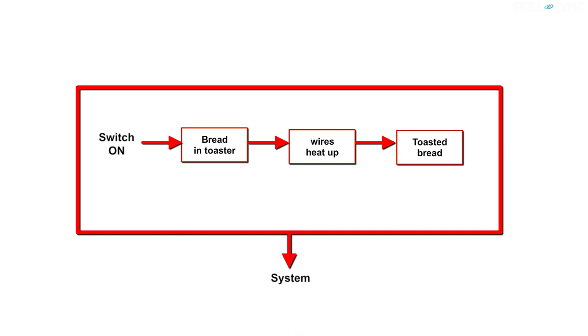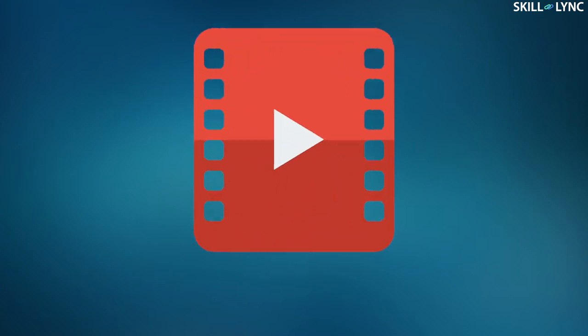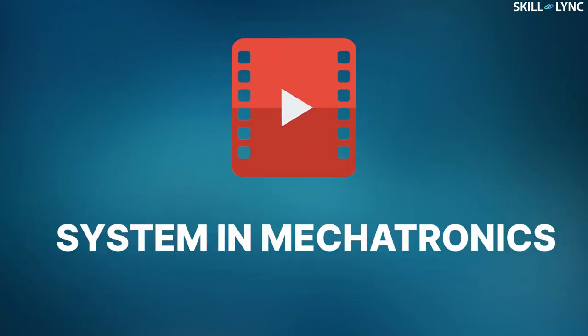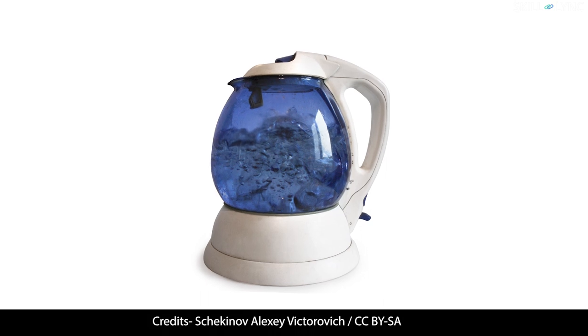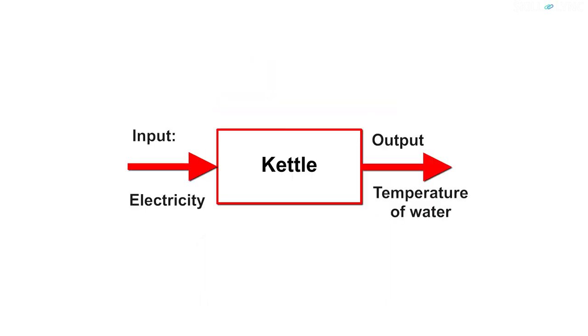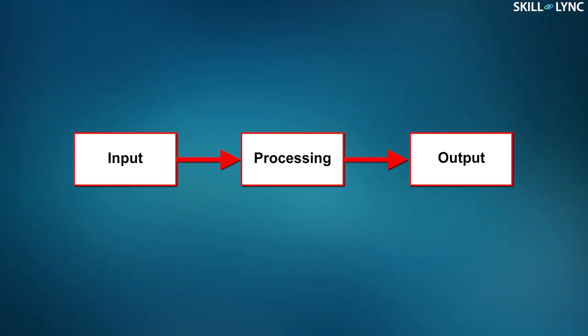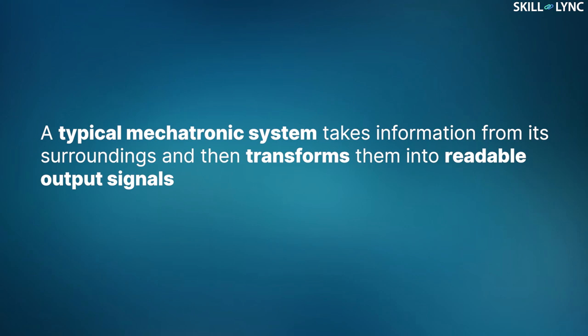In today's video we'll be discussing exclusively mechatronic systems. If we take an electric kettle and boil water in it, then the input is electricity and the output is the changed temperature of the water. When we talk about systems in mechatronics, we can represent it as a box or block diagram that has an input and an output. This is termed as modeling of a system. In a mechatronic system, we are concerned about not what goes inside the system but what the output is. A typical mechatronic system takes information from its surroundings and then transforms them into readable output signals.